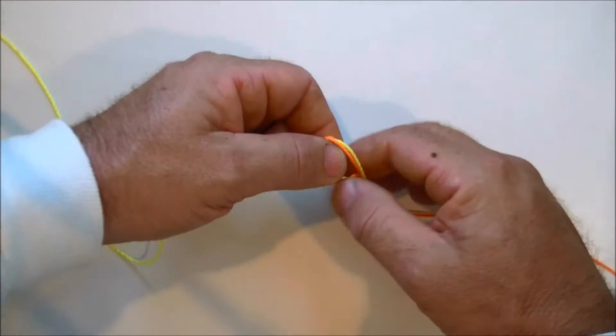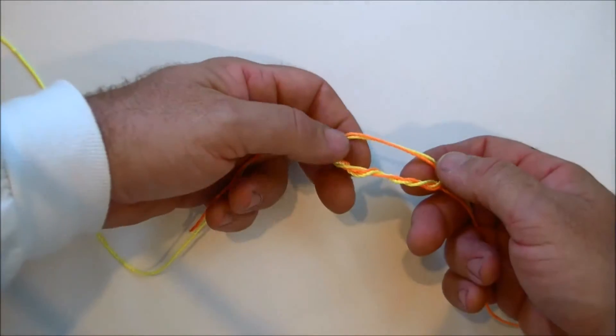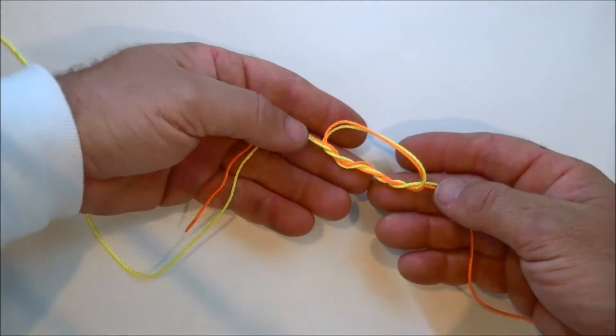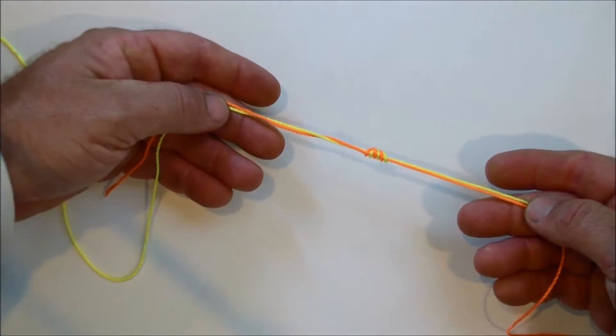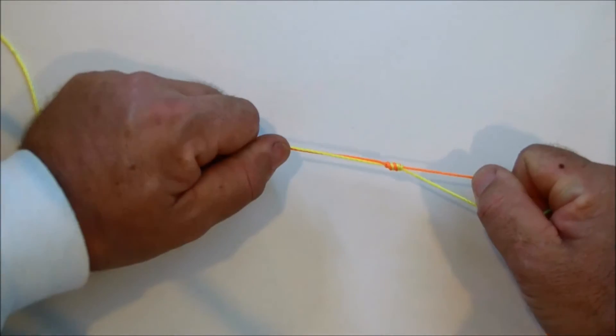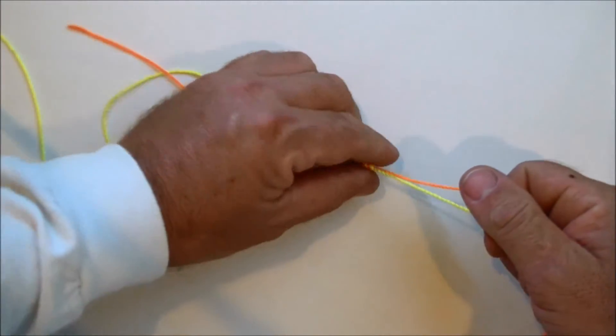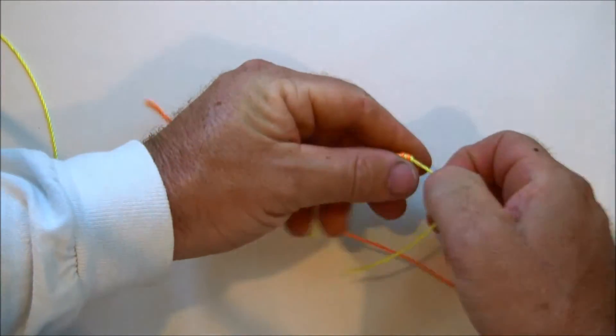You want to grab all your lines at one time, two on either side of that loop, and pull together real slow but firm. You'll see that knot slips together really nice. That's a strong double surgeon's knot right there.